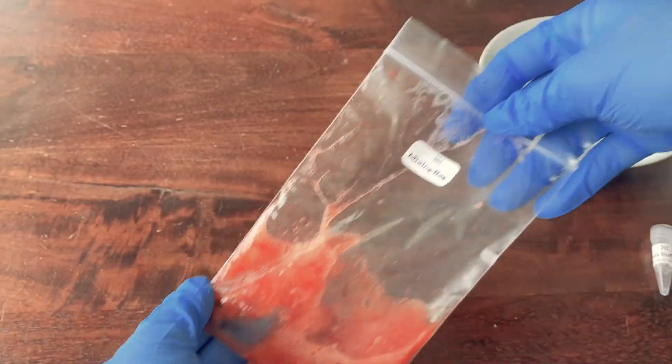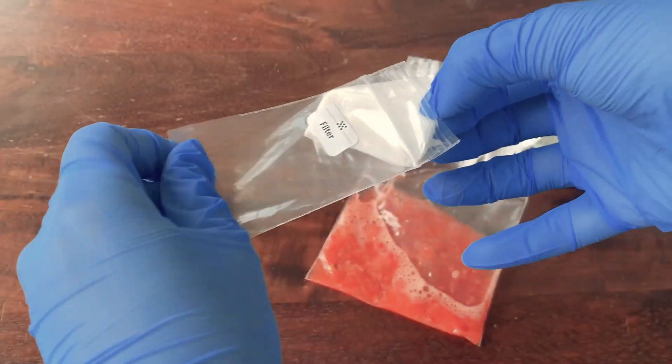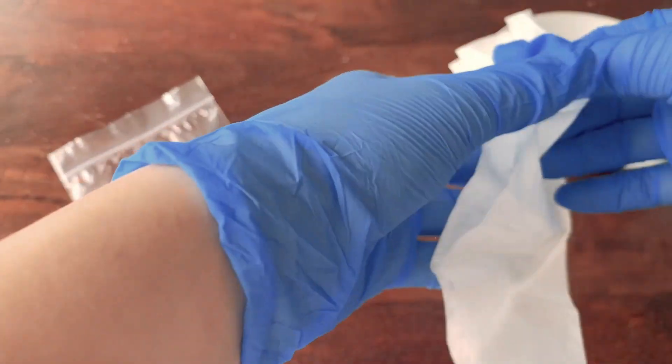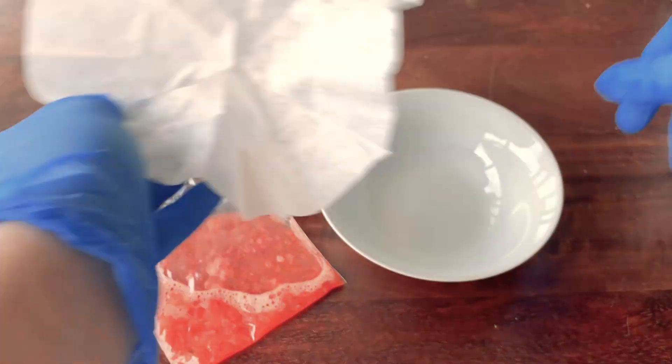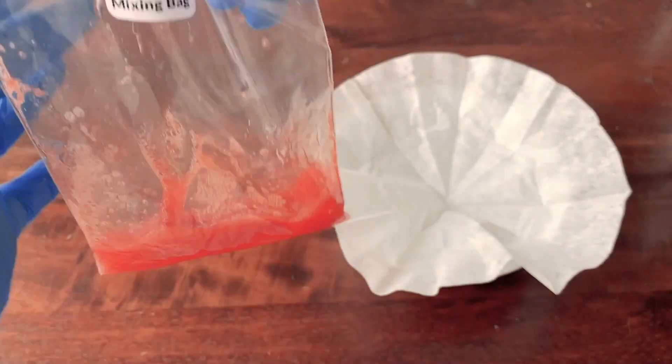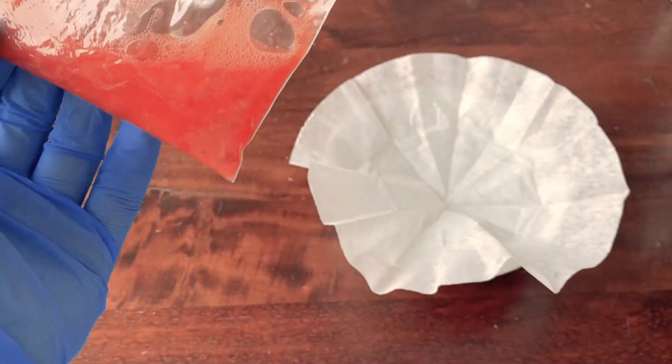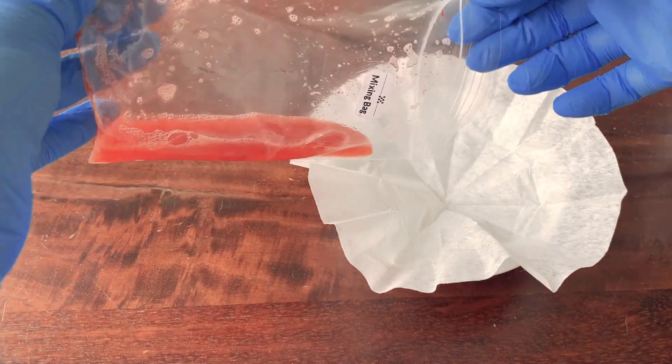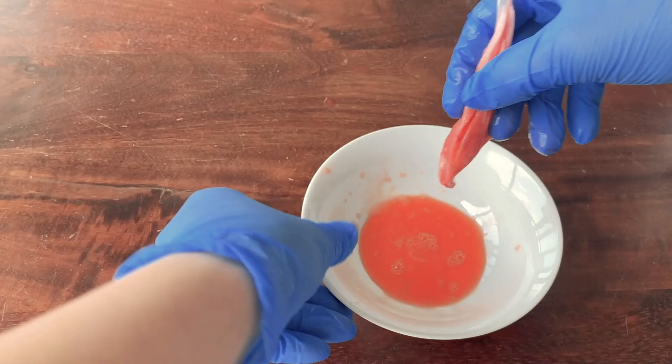So now you can see you have more liquid. The next step is filtering the solution. So now we can open the filter. You can use either a glass to put it in or a plate like this, whatever is easier for you. So carefully, one more time mix it, because you can see you still have these small cells. We don't need them. That's why we're going to filter it so we only have the solution with the DNA. This much is going to be enough.